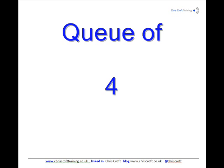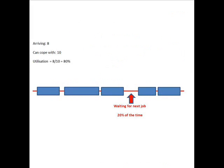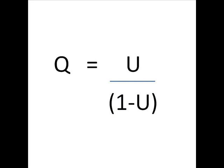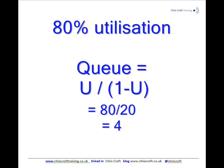There's a brilliant formula which tells you the length of the queue. It's based on the fact that your utilization, in this example, is 80%, because you can cope with 10 and you've only got 8 coming in, so you're 80% utilized. 20% of the time you're sitting around with nothing to do, 80% of the time you're working. The formula says the queue length will be the utilization divided by 1 minus the utilization — so it will be 80 over 20, which is 4.